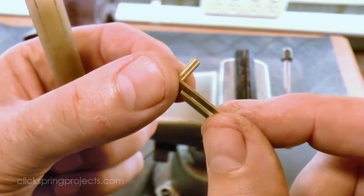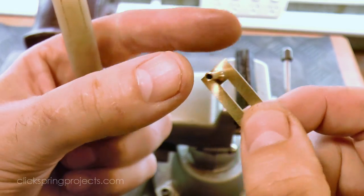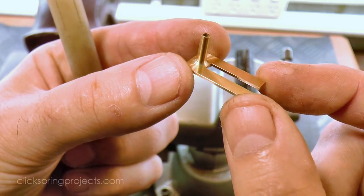As for the upper fitting, a light touch with an oilstone breaks the sharp edges, leaving a presentable edge, and that completes the fork.